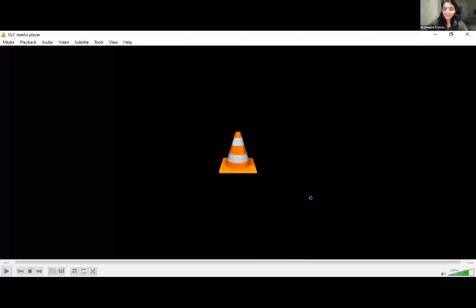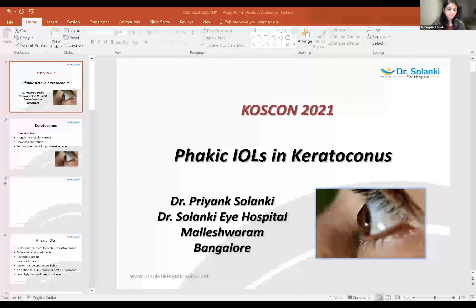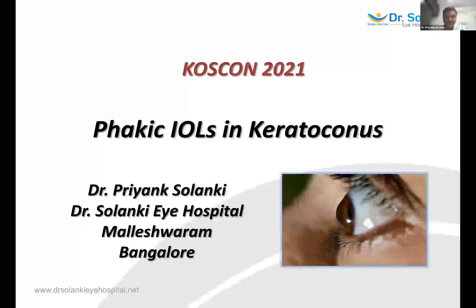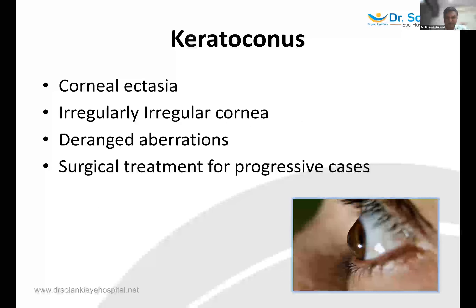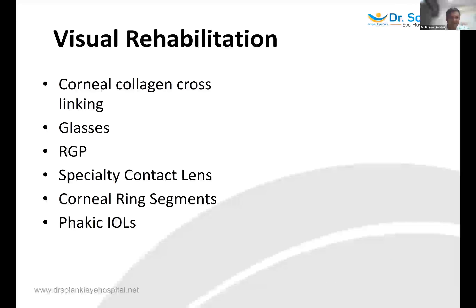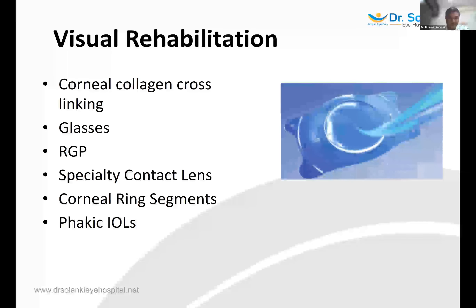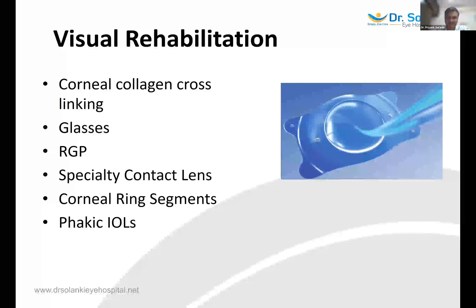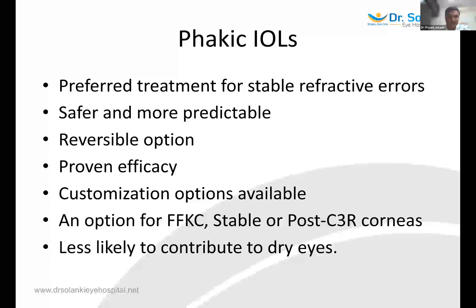Thank you. At the outset I thank the Karnataka Ophthalmology Society for this opportunity to give an insight on phakic IOLs in keratoconus. As we know, it is a conical ectasia with an irregularly irregular cornea, with a lot of spherical and chromatic aberrations. Surgical treatment is for progressive cases. Visual rehabilitation has already been discussed — collagen cross-linking, glasses, RGP and special edge contact lenses, corneal ring segments — and finally comes the phakic ICL, which I will focus on.